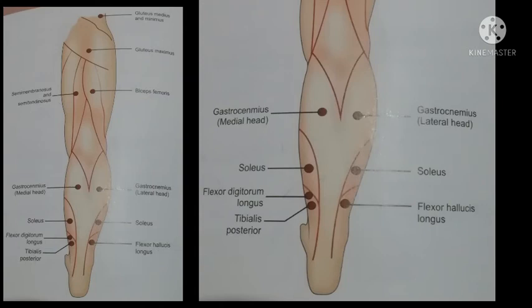The action of gastrocnemius is plantar flexion. To stimulate the lateral side of the soleus muscle, the pan electrode should be on the upper one-fourth of the posterior surface of the leg. To stimulate the medial side of the soleus muscle, the pan electrode should be on the upper one-fourth of the posterior surface of the leg on the medial side. The action of soleus muscle is plantar flexion.